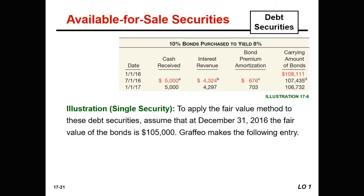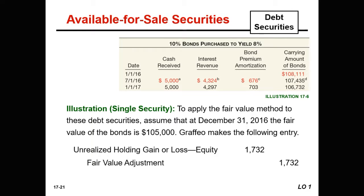To apply the fair value method to these debt securities, let's assume that on December 31st, 2016, the fair value of the bond is $105,000. We have a current carrying value of $106,732. Reducing from that the $105,000 fair value means we need to reduce book value with a fair value adjustment of $1,732. That will go to our unrealized holding gain or loss equity account — in the stockholders' equity section as an element of other comprehensive income for the current period.